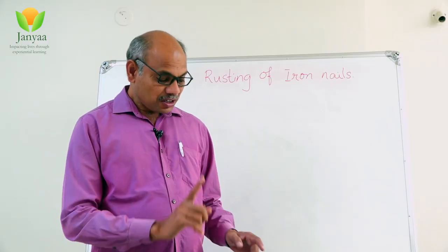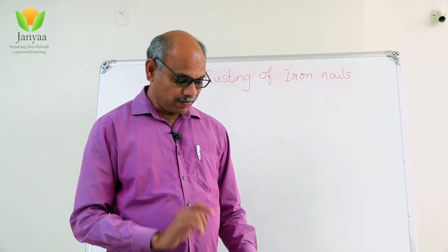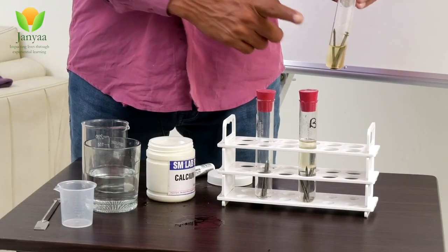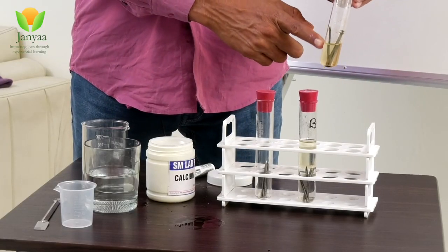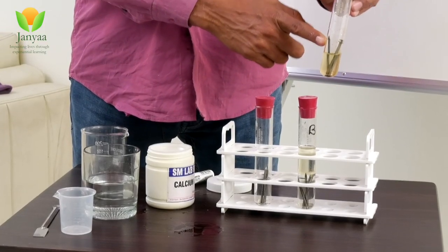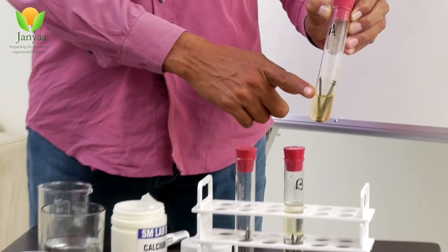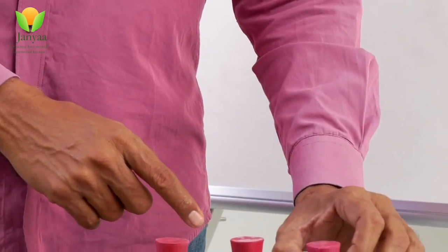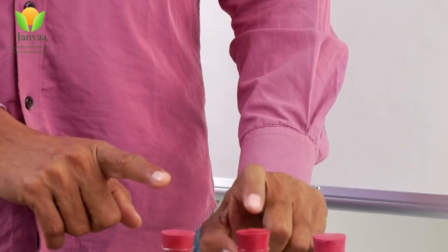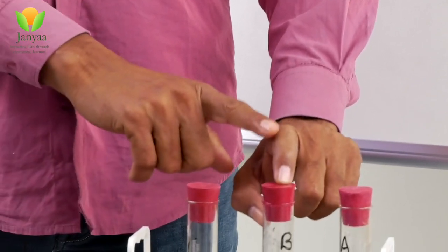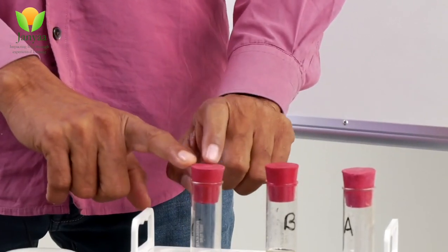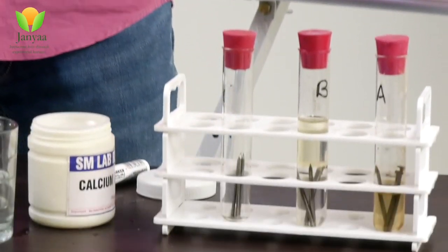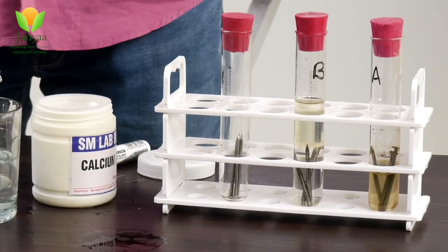Your observation will be: the nails in the first test tube get rusted, whereas nails in the second test tube B and in the third test tube C did not get rusted. Why?